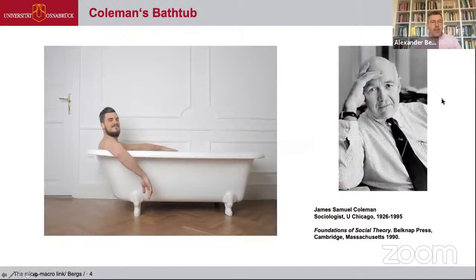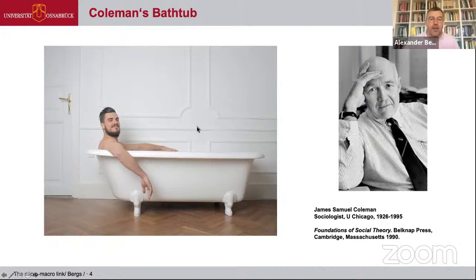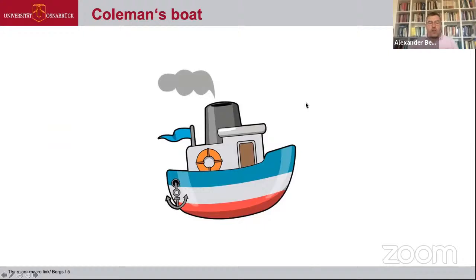What is Coleman's bathtub? Basically it's a bathtub shape. This is James Coleman, a sociologist from the University of Chicago, who wrote a very influential book called Foundations of Social Theory, in which he developed a model of social dynamics and actions. It's called Coleman's bathtub or Coleman's boat — some people call it one, some the other — and I will be referring to them interchangeably.